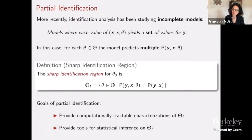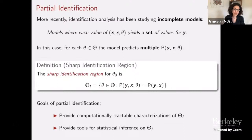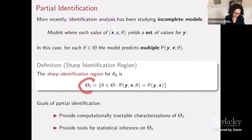To draw a connection with the previous talk: when point identification is not possible, the standard literature tries to find additional restrictions to pin down a unique theta zero. The problem we face here is that sometimes those additional restrictions needed to shrink theta_I to a singleton are non-testable — they don't come from underlying economic theory. So we want to avoid those assumptions altogether and ask: if I cannot make credible or testable assumptions, can I still learn something useful about the parameter vector theta? The answer is typically yes.